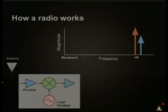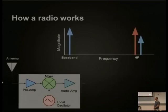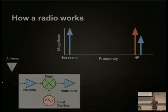Now comes the important part: the mixer. It takes the difference between the local oscillator and that amplified HF signal, causing a mirror to be created down at baseband. For our purposes, baseband is just audio signals — something you can put over a wire into your sound card and process with a PC. That signal is then amplified again by a final amplifier. Now the signal has been mixed down from HF, and we can start doing software-defined radio with it.